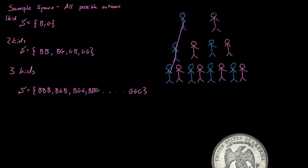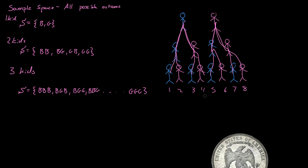So the sample space is this one outcome, plus this one outcome, plus this outcome — counting them all up: one, two, three, four, five, six, seven, eight. So it's these eight total possible outcomes, and the sample space size is eight.